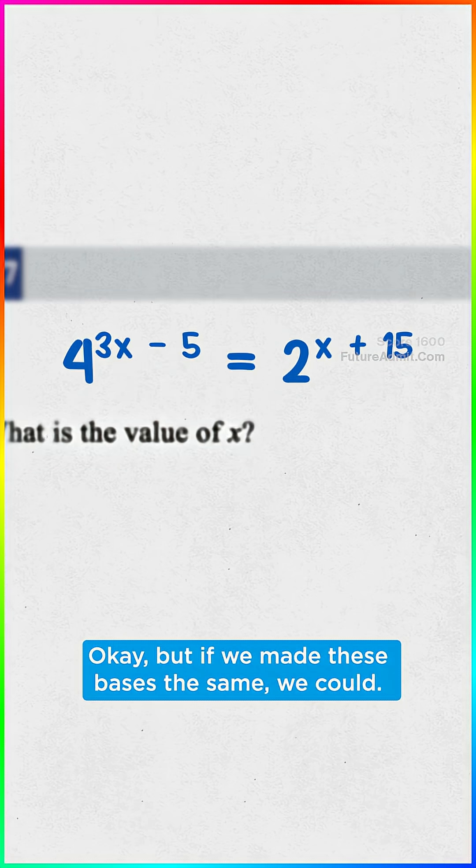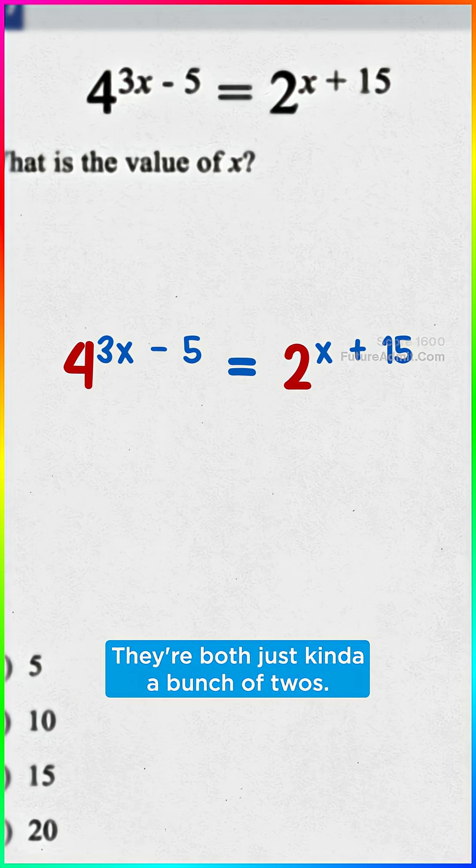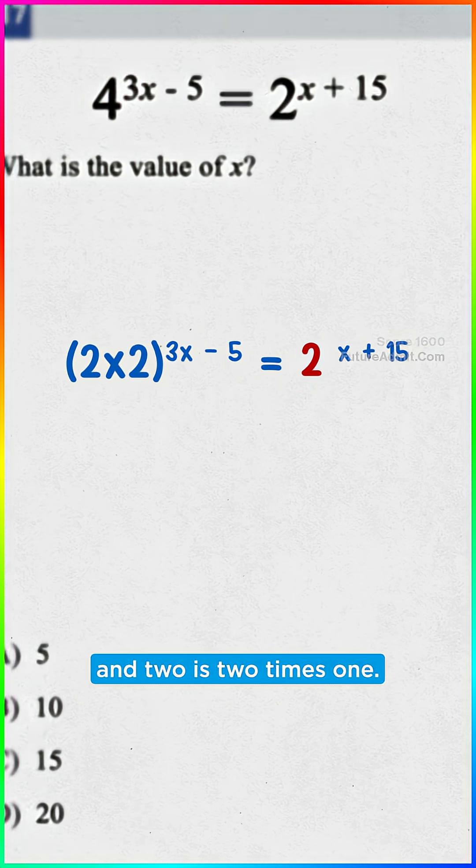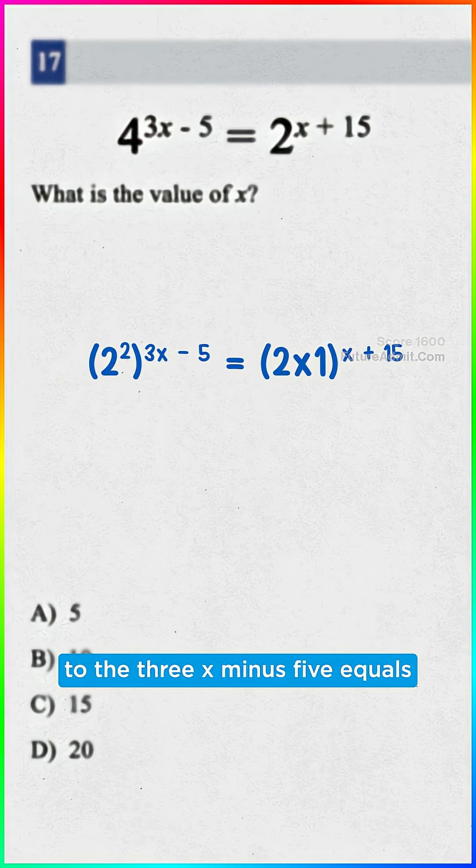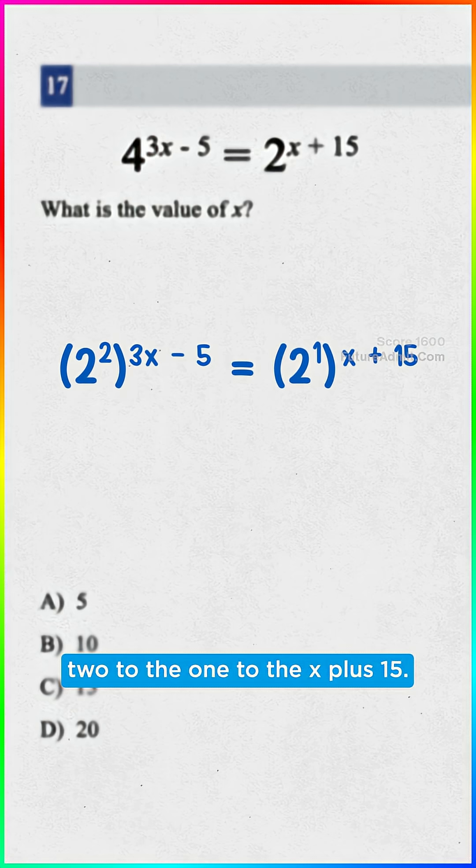Okay, but if we made these bases the same, we could. 4 and 2, they're both just a bunch of 2s. 4 is 2 times 2, and 2 is 2 times 1. So 2 to the 2 to the 3x minus 5 equals 2 to the 1 to the x plus 15.